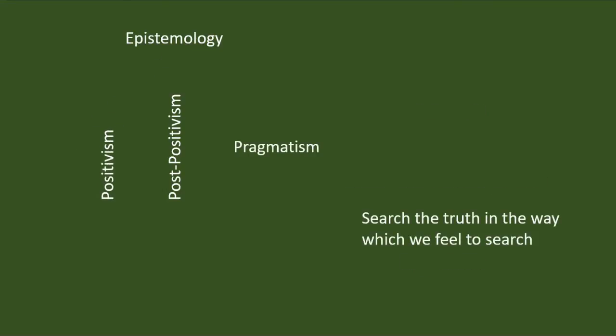If we are using the way of pragmatism, we are standing in a position to say that reality is neither completely objective nor completely subjective. So if we want to learn the reality, we have to give importance to the objectivity of the reality and the subjective experience of the individuals about the reality. Researchers who are in search of the reality in a pluralistic environment will be choosing pragmatism as their way of learning about the reality.